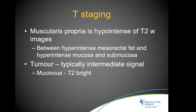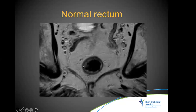For T-staging, it is important to identify the muscularis propria, which appears as a hypointense thin line on T2-weighted images along the outer layer of the rectal wall. It lies between the hyperintense mesorectal fat and the hyperintense mucosa and submucosa. Tumor typically has intermediate signal intensity, whereas mucinous tumors are generally T2 bright. On a normal rectum, mucosa and submucosa are bright, and the dark line around them is the muscularis propria.